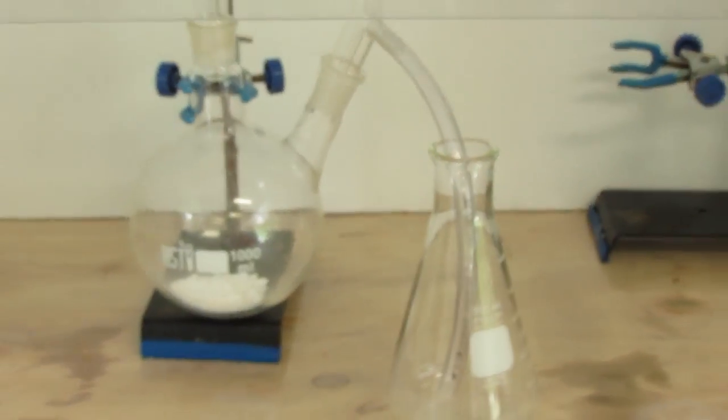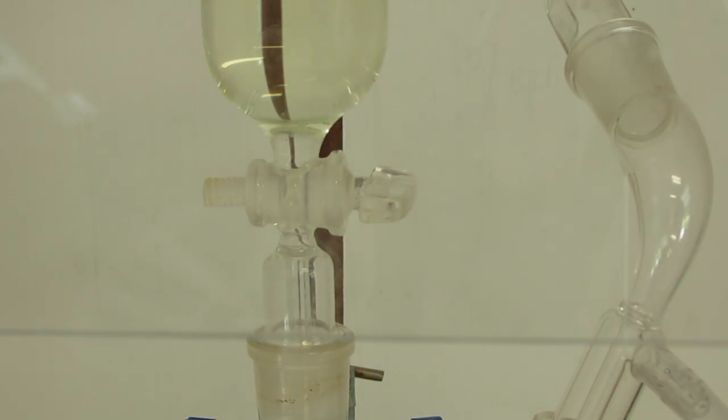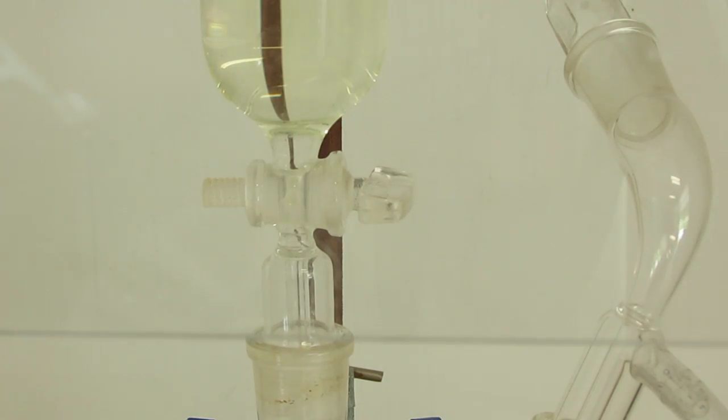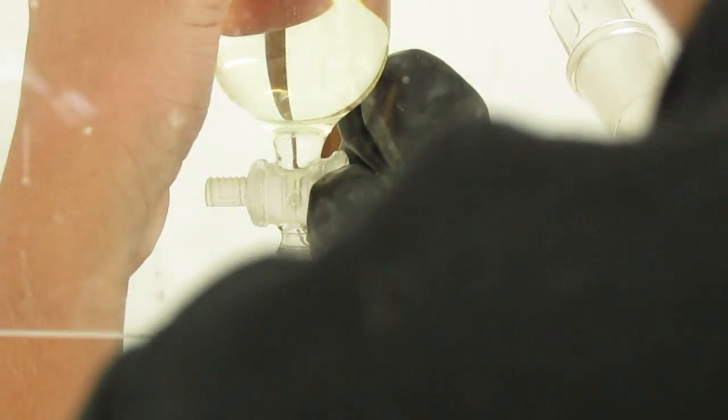Then I have on the second arm there, I have a vacuum receiver that I have the end stoppered off so that I can attach a hose to it that will lead the chlorine gas into a flask. Here I am just starting the addition of hydrochloric acid.